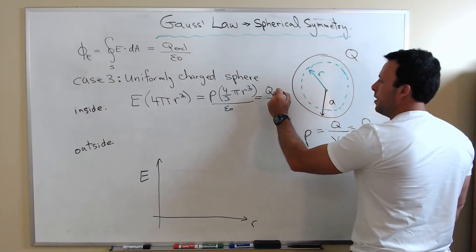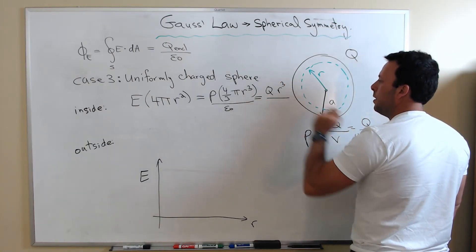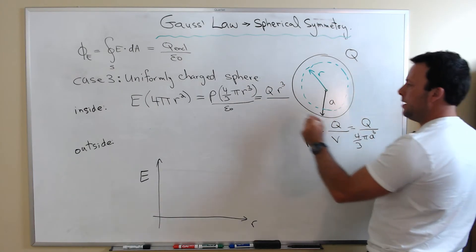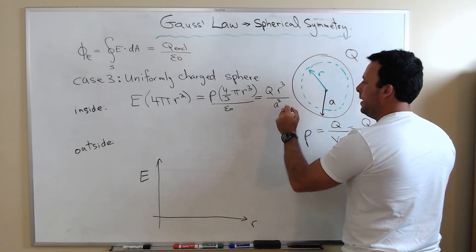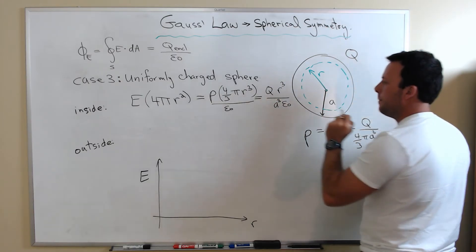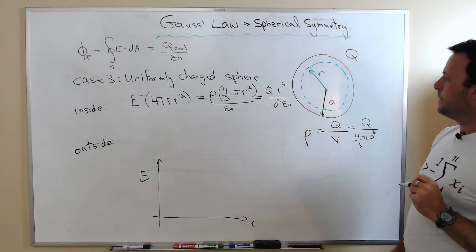I'm going to be left with R cubed. I'm going to be left with A cubed. And I'm going to be left with epsilon zero.